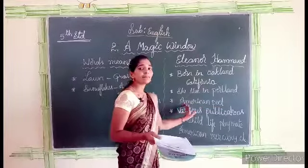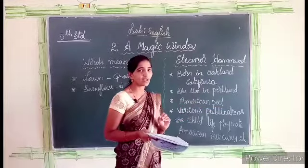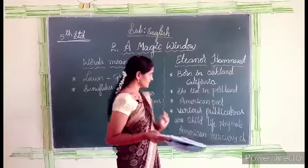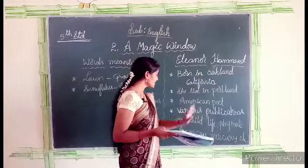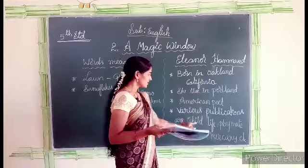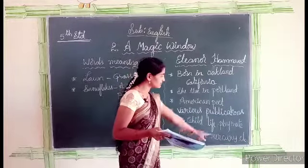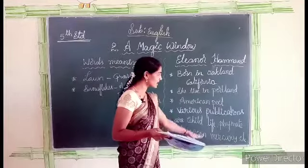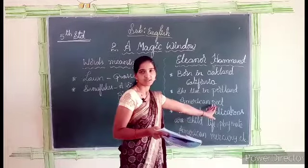She is a good American poet and also an English writer. She had various publications such as Child Life, Playmate, American Mercury, etc. These are all her various publications.